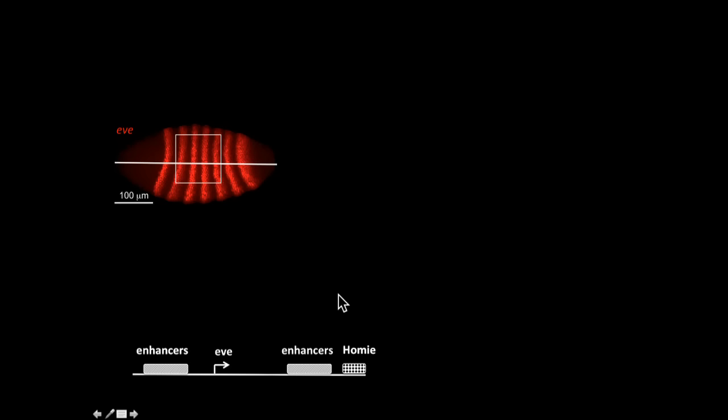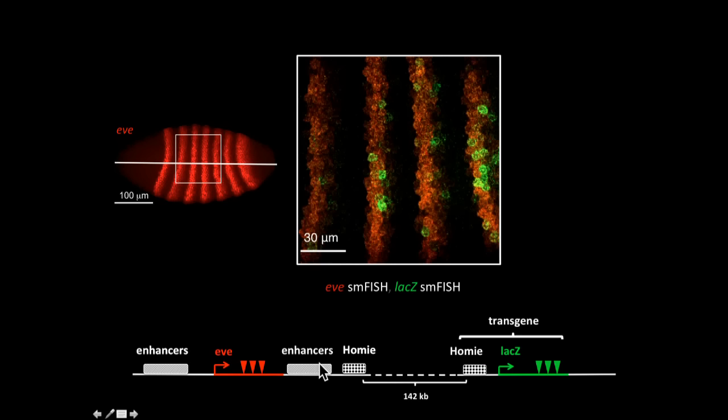which is called Homie. Why is it called Homie? Because if you copy this piece of DNA and paste it somewhere else along the same chromosome, these two Homies can somehow interact with each other. And the interaction is able to bring the promoter of this reporter gene back home to the Eve locus.